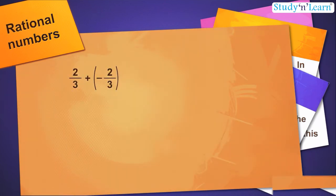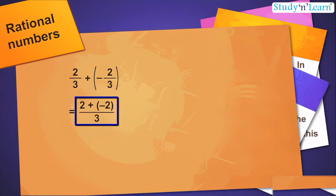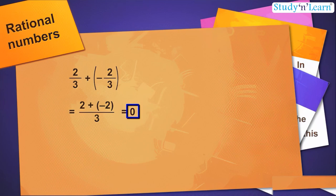For the rational number 2 by 3, we have 2 by 3 plus minus 2 by 3 is equal to 2 plus minus 2 by 3 is equal to 0.